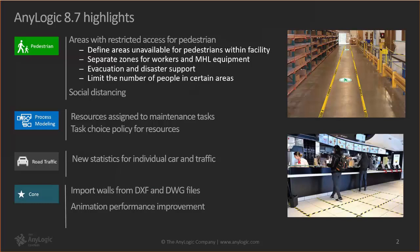Now you have almost the same feature in the Pedestrian library — you can restrict the number of people in certain areas, or limit access according to pedestrian type. If you're modeling a facility, you can separate areas where material handling equipment operates from areas where people can go. This feature may also simplify modeling of evacuation from a plant or factory. We also added a social distancing feature in the Pedestrian library.